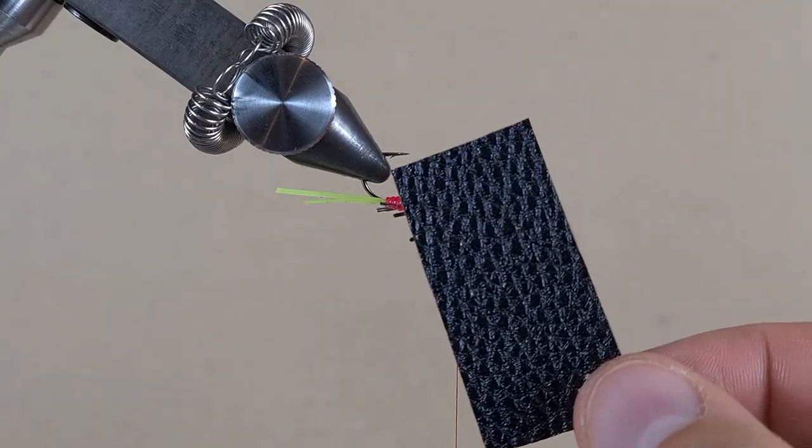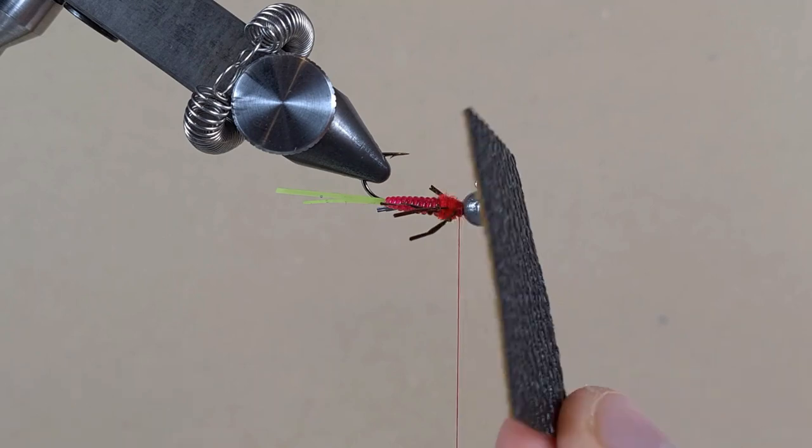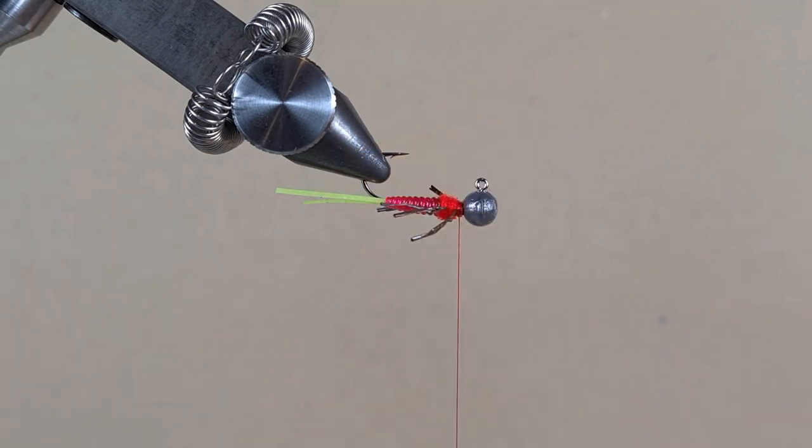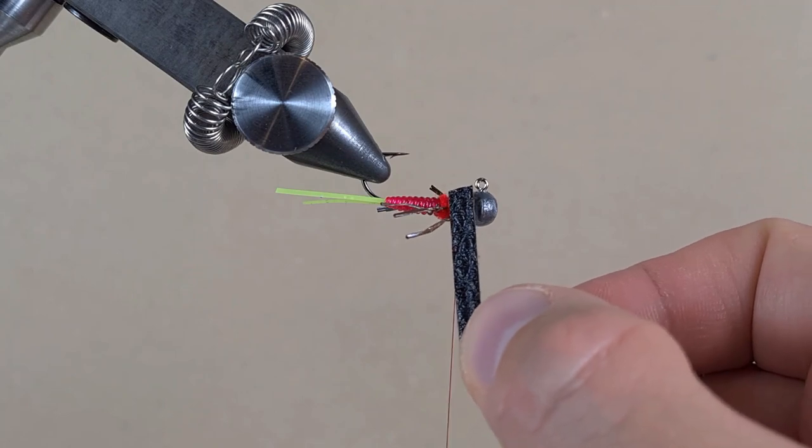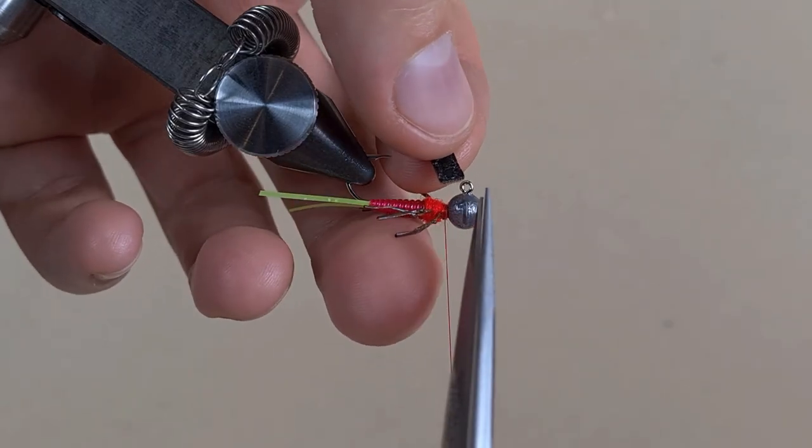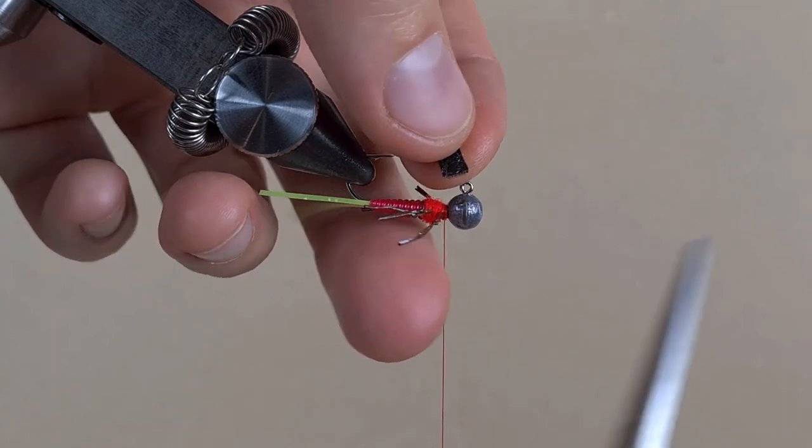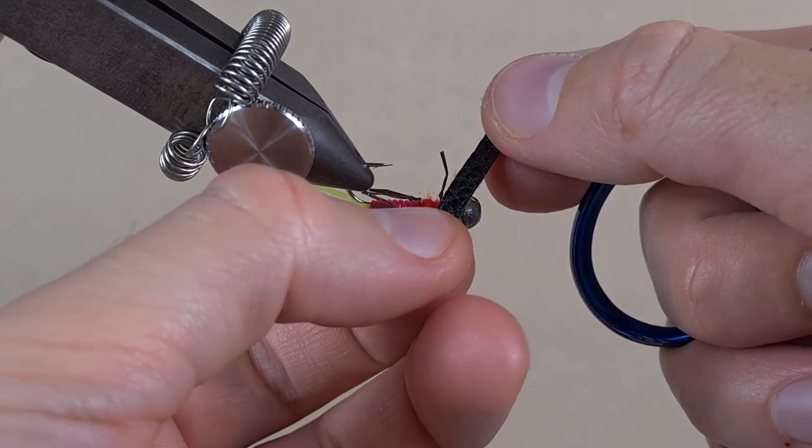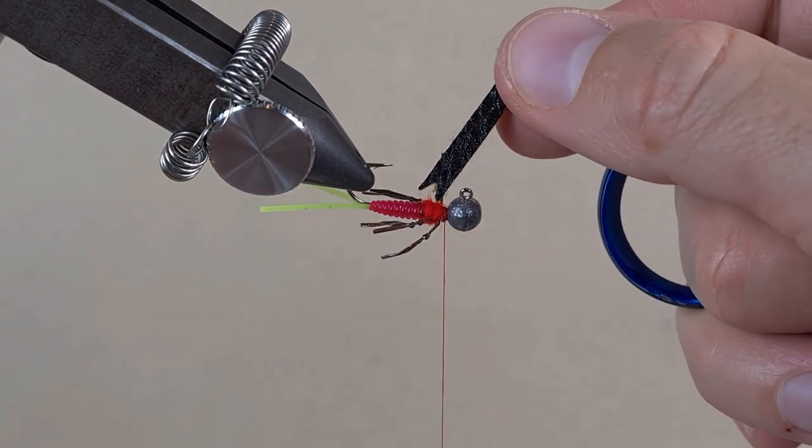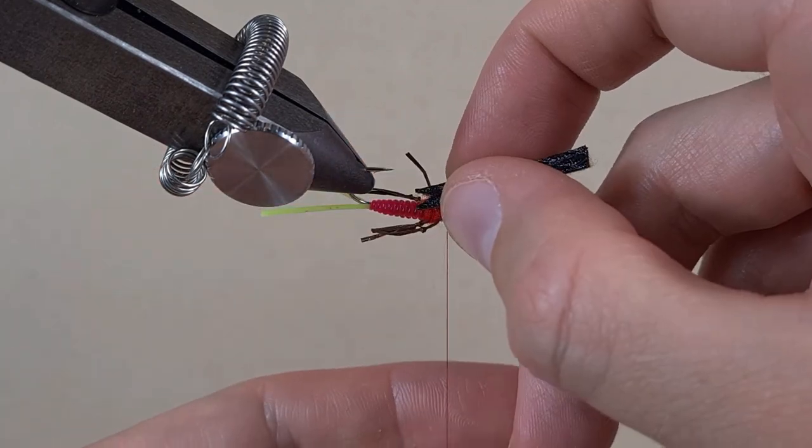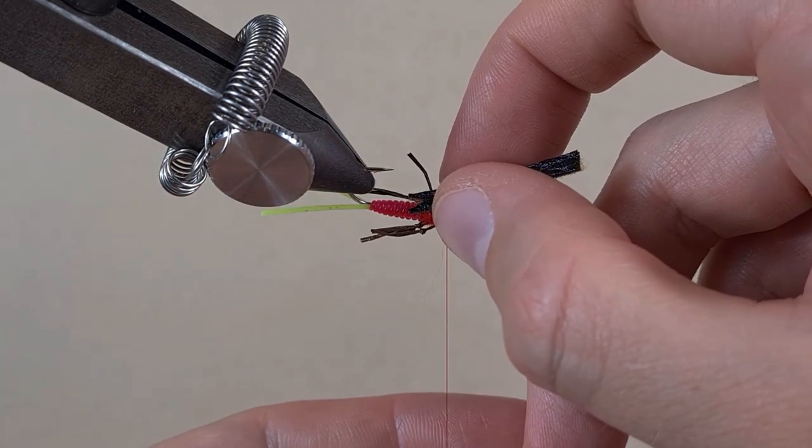This is a piece of artificial leather. It's black on the top and fabric material at the bottom. I have cut about 3mm strip of it. Now we will cut a V into it. Here we go. Now we'll position it on the top, so the back of the V extends just a little bit past the thorax.